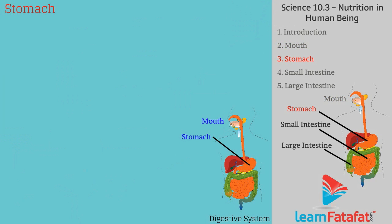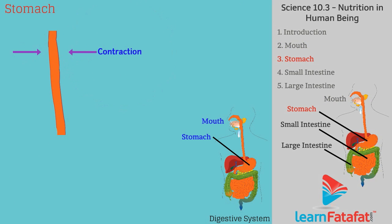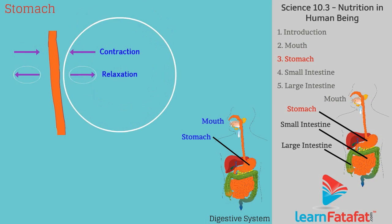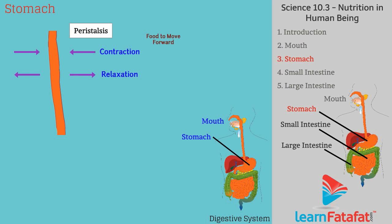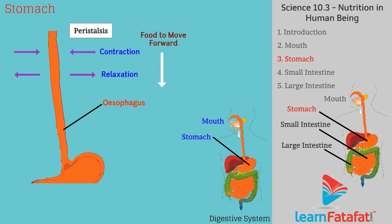The rhythmic contraction and relaxation of muscles of the canal are called peristalsis. It helps the food to move forward. Through the esophagus, food reaches a J-shaped organ called the stomach.